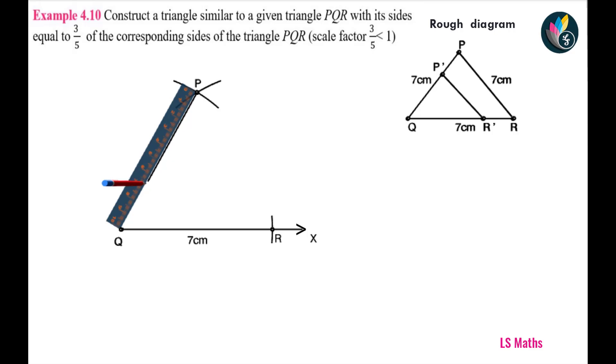Mark the point of intersection as P. Join PQ. Next, join PR. Now, we get the triangle PQR.